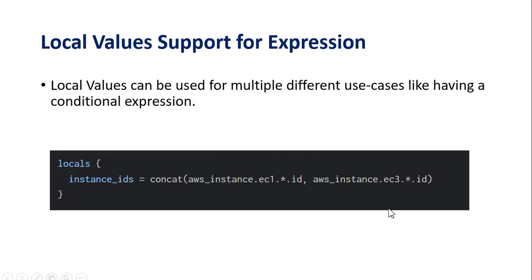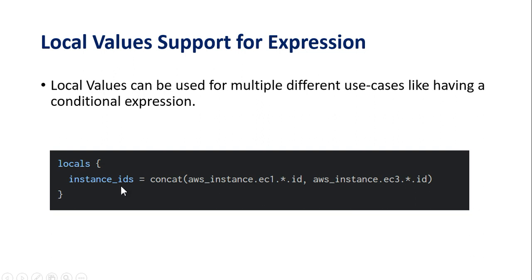Terraform locals are not limited to tagging — they can also be used with expressions. For example, I have created a locals block where instance_ids uses the concat function. If you need to use that function across other resource blocks as well, you can simply reference locals.instance_ids instead of copying and pasting the entire function argument everywhere.